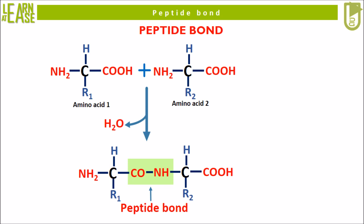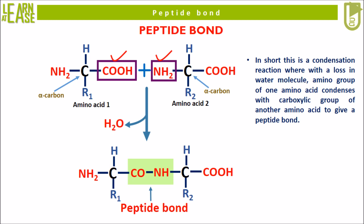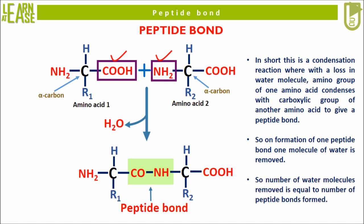A peptide bond is formed when the carboxylic group at the alpha carbon of one amino acid condenses with the amino group at the alpha carbon of another amino acid. In short, this is a condensation reaction where, with a loss of a water molecule, the amino group of one amino acid condenses with the carboxylic group of another amino acid to give a peptide bond. On formation of one peptide bond, one molecule of water is removed, so the number of water molecules lost is equal to the number of peptide bonds formed.